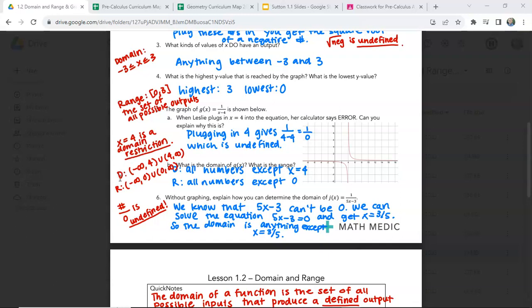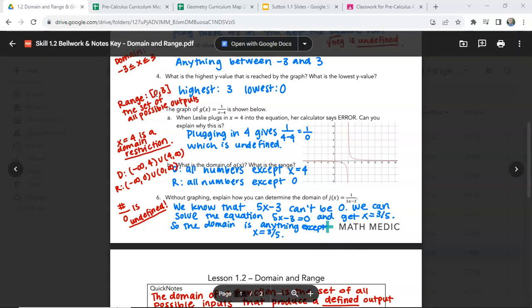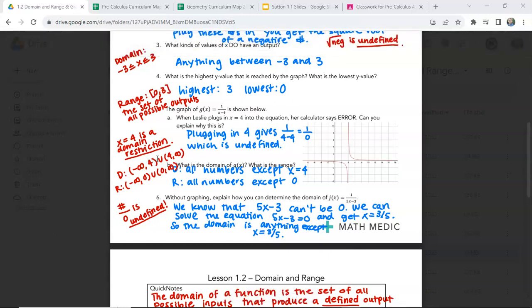So the way we would write this would be like this. So domain is from negative infinity to 4. And we use parentheses here to indicate that we're not including negative infinity or 4. Up here we use brackets to indicate that we are including those. So parentheses means we're not. And then the u means union. So we're including this and this from 4 to infinity. So this tells us basically we're including everything except for 4.